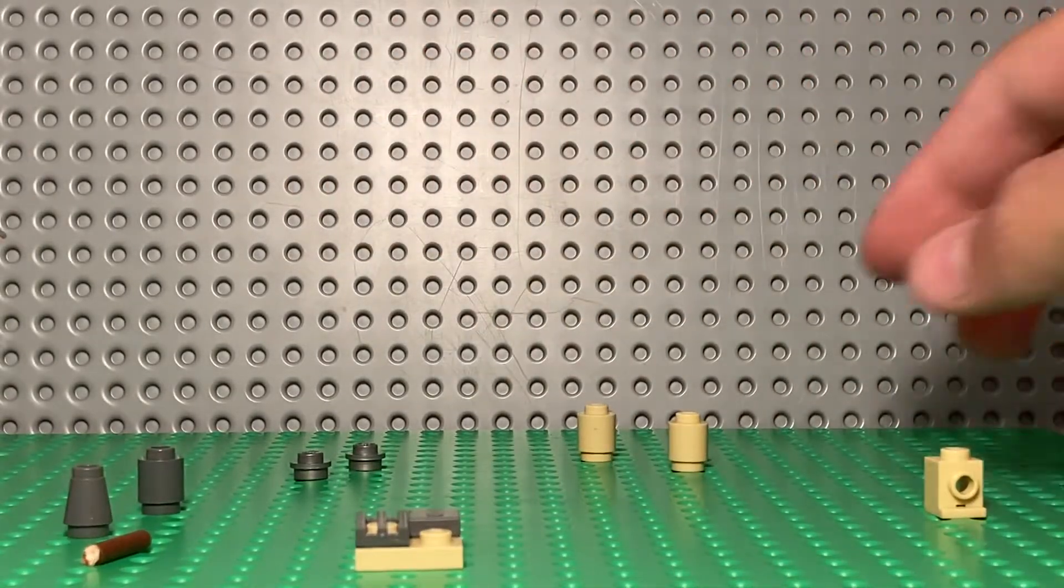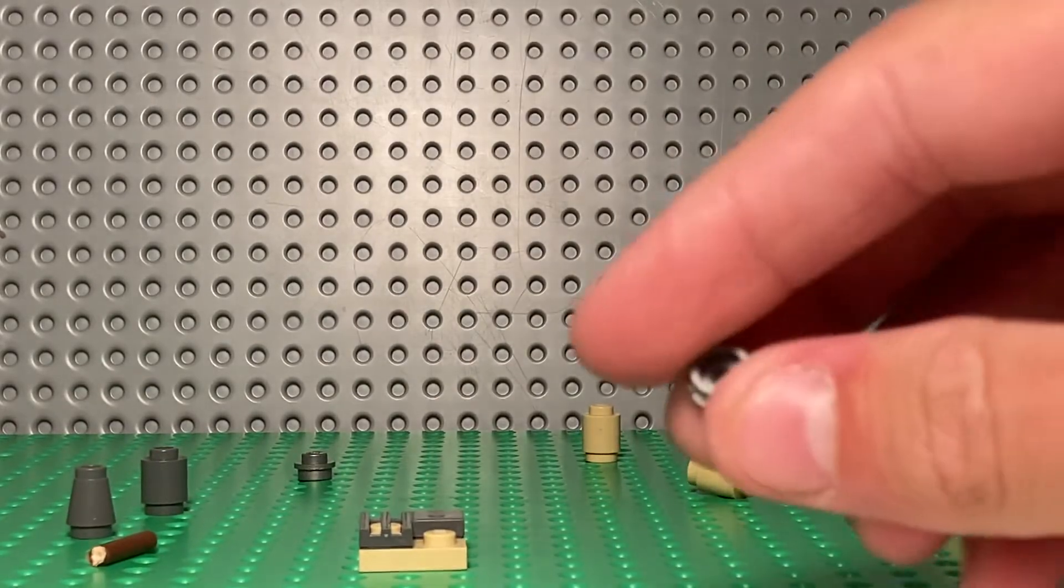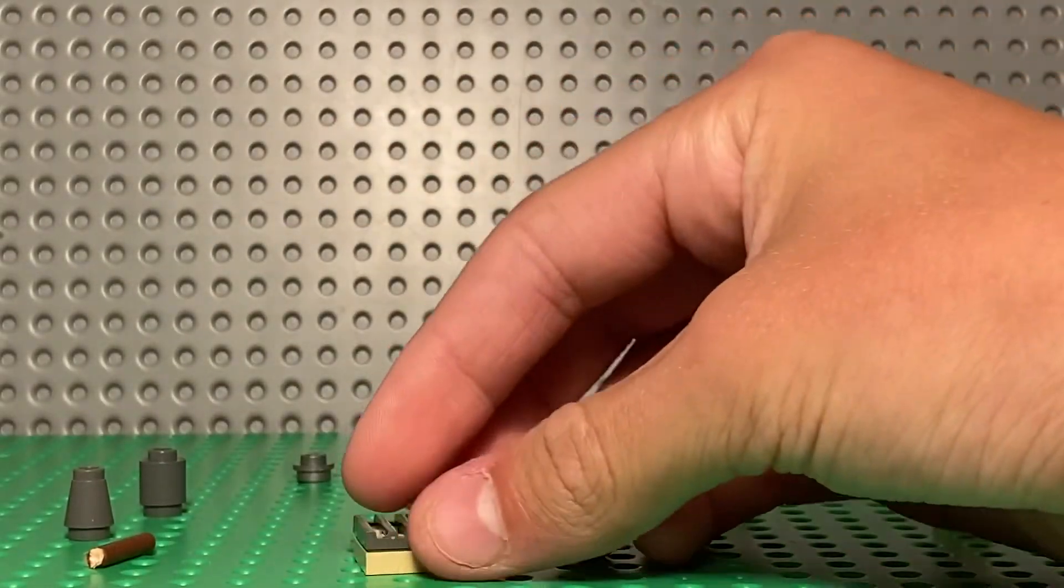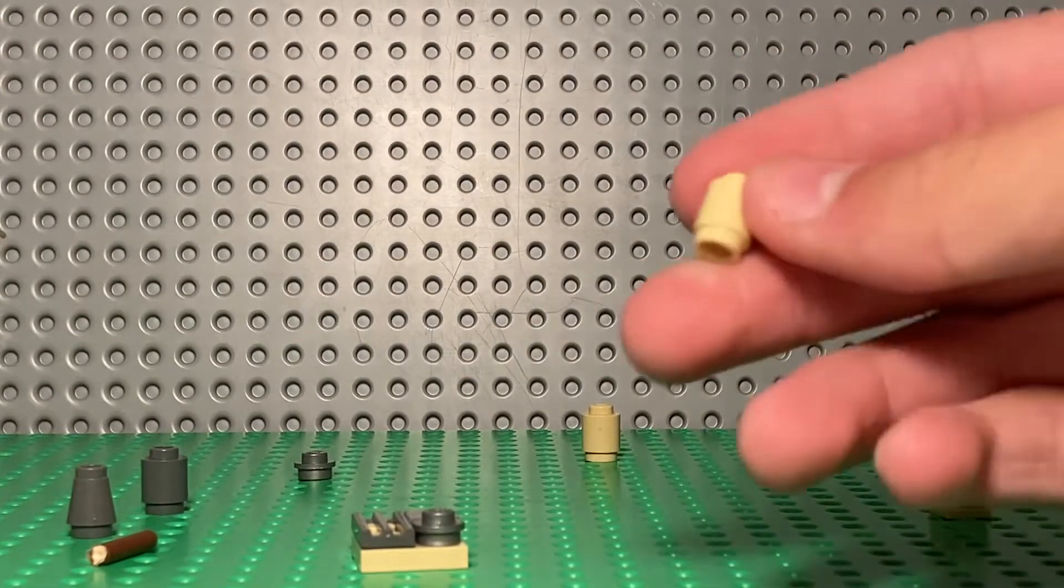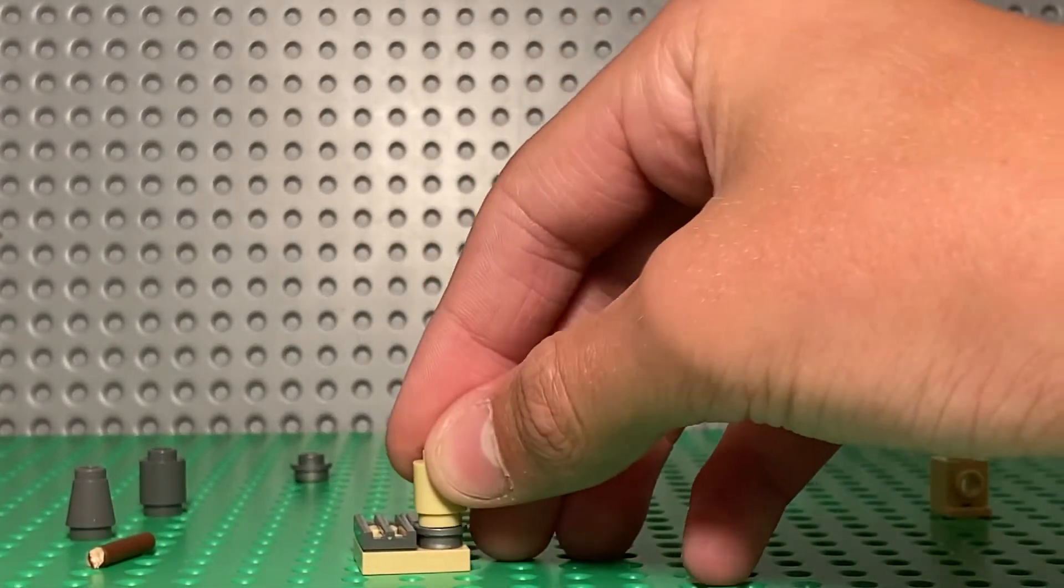And then now I'm going to get one of these silver cylindrical 1x1s. Put that right here. Then one of the cylindrical 1x1 bricks that is in tan. Put that right there.